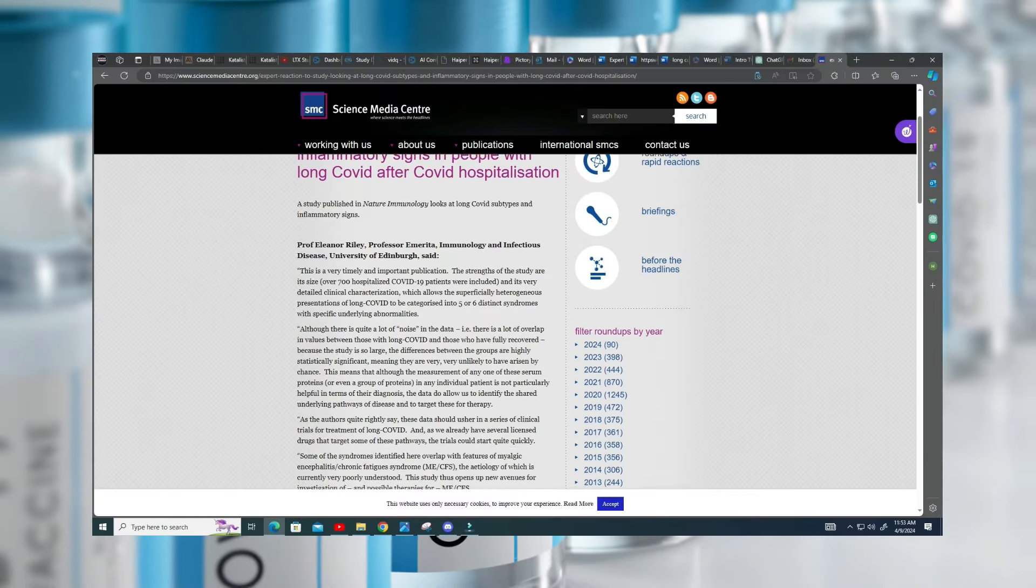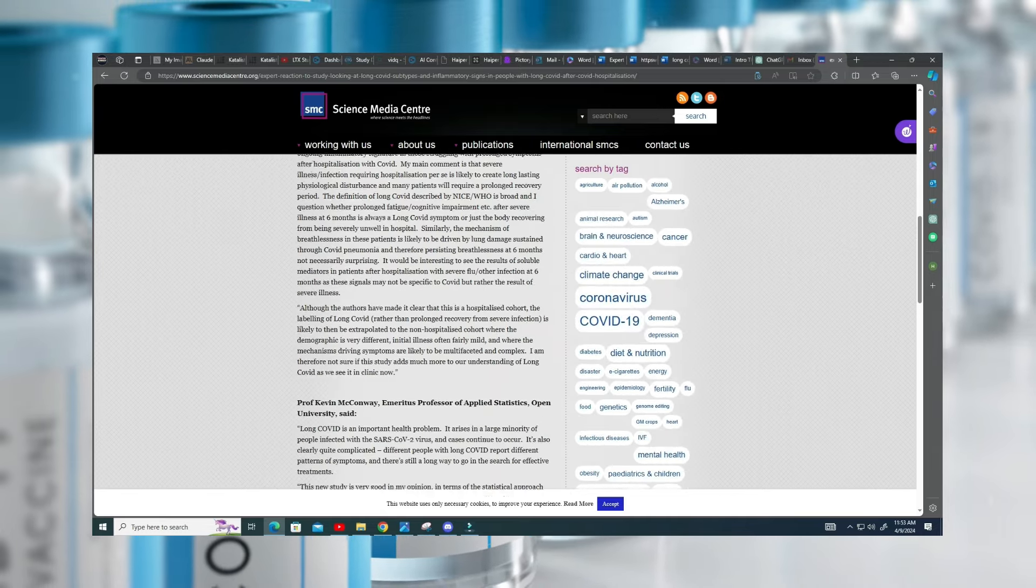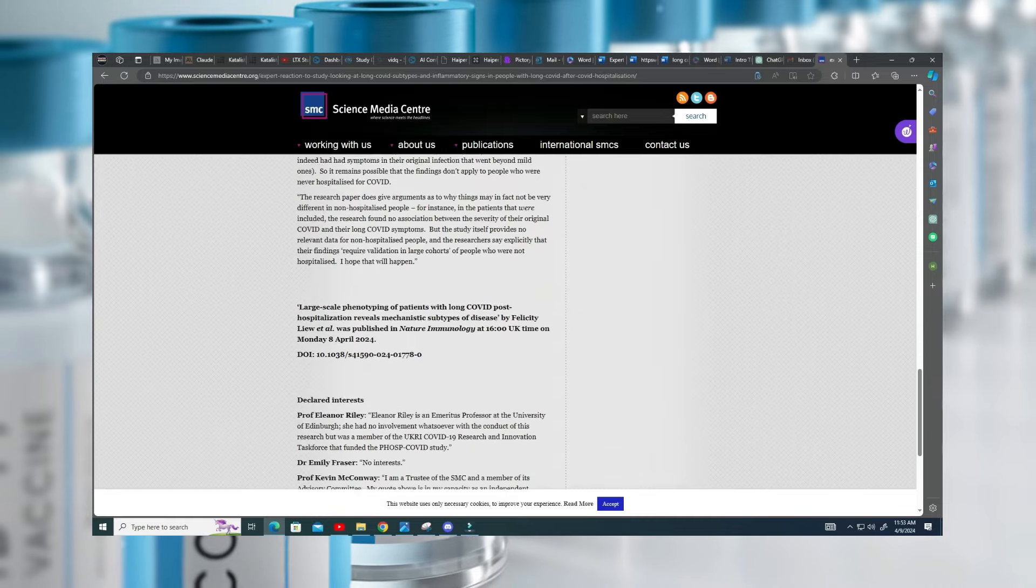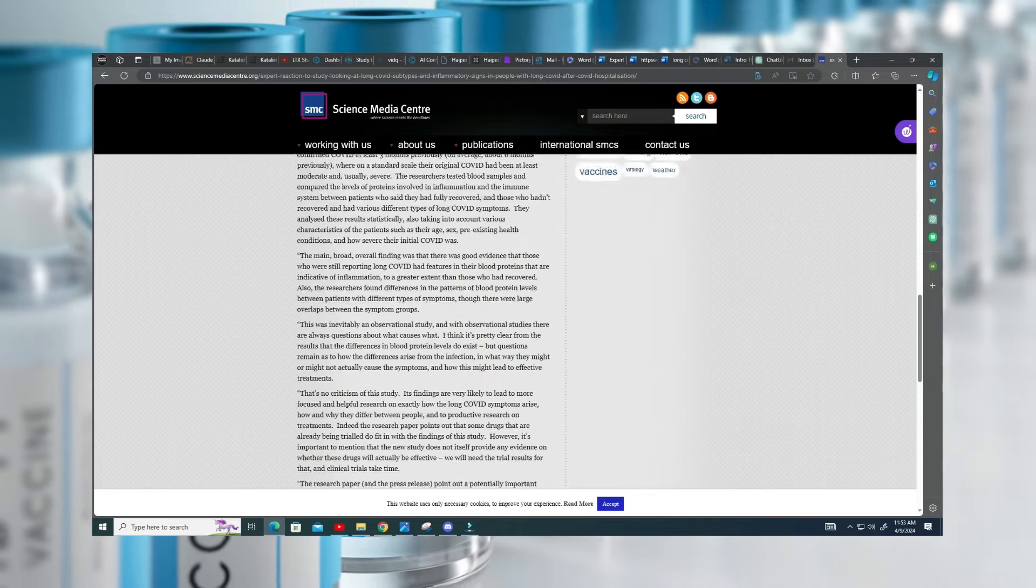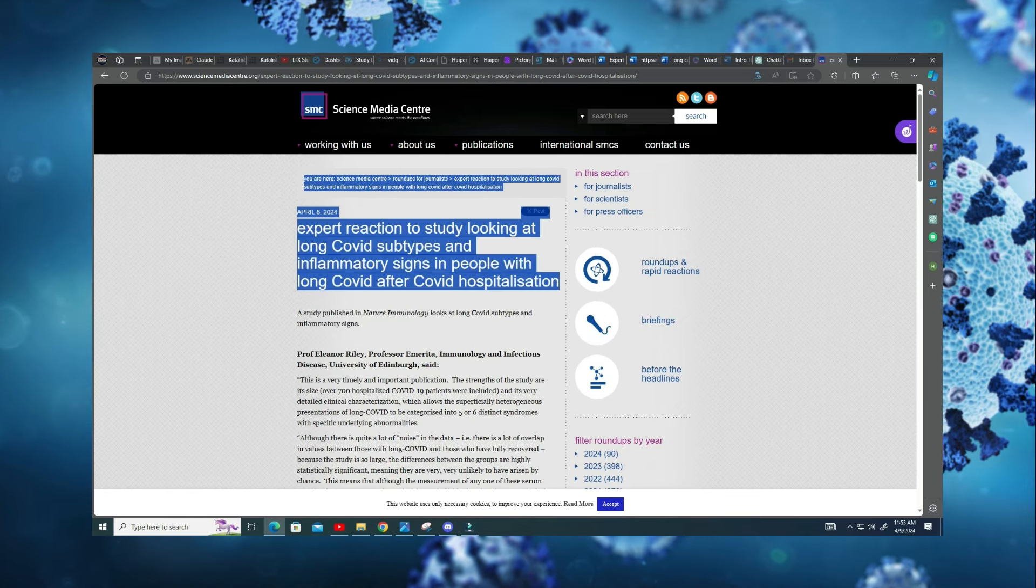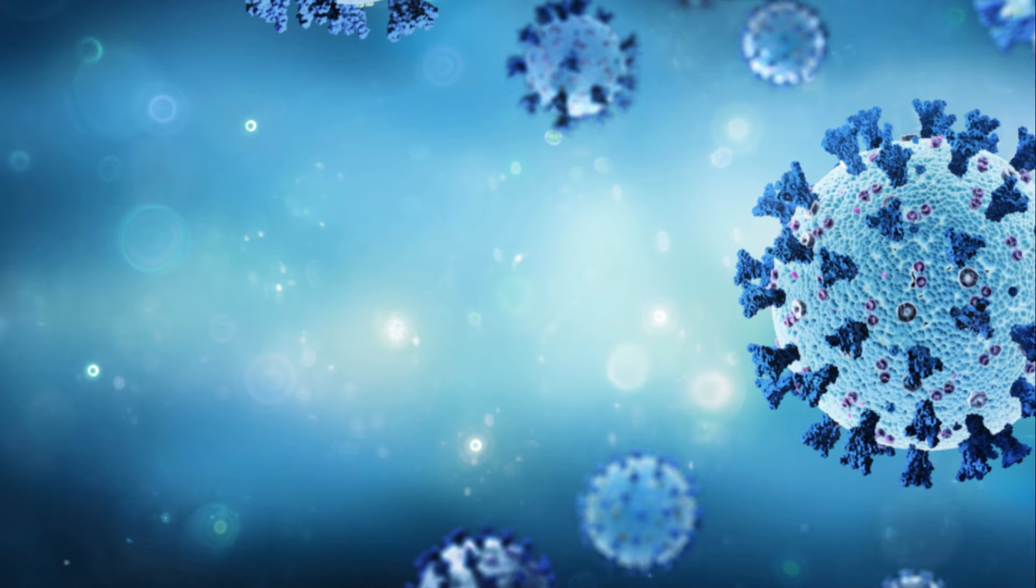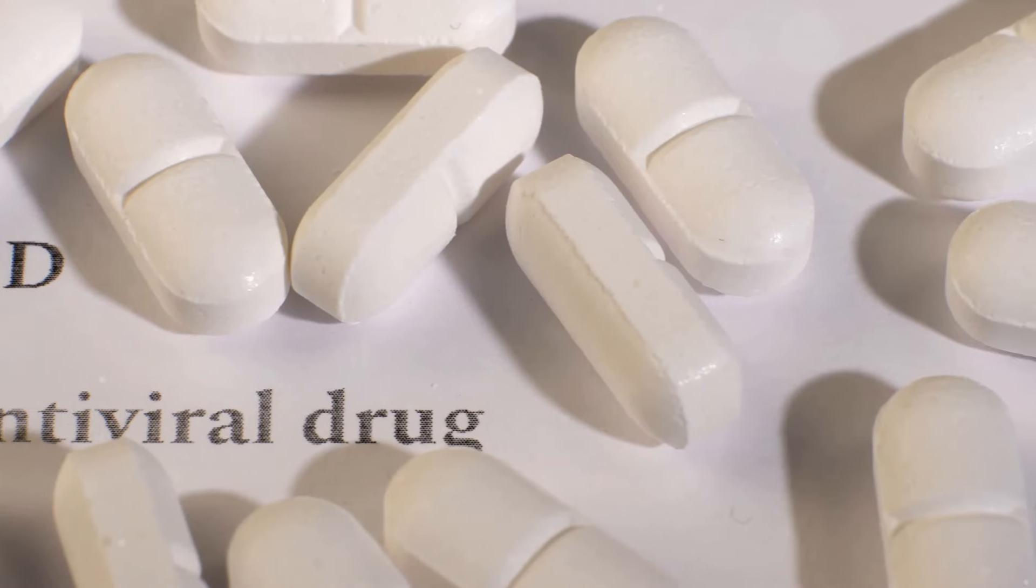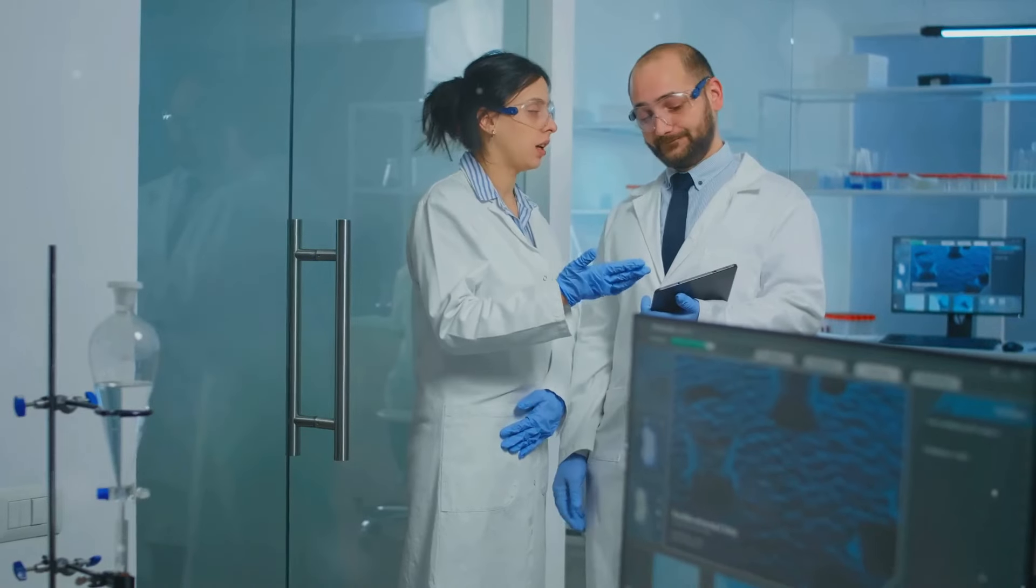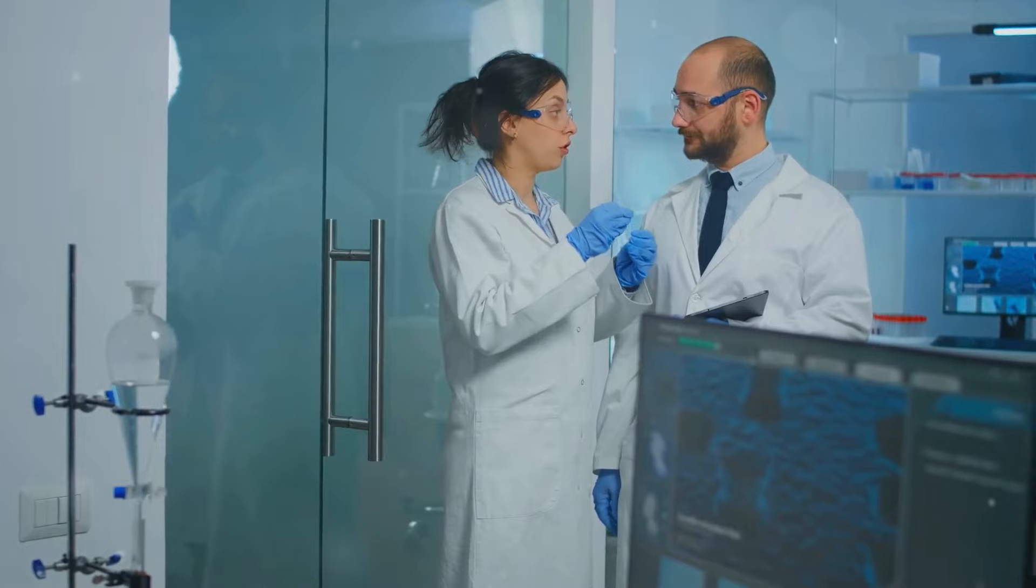Professor Eleanor Riley from the University of Edinburgh praises the study for its detailed clinical profiling over a robust patient cohort. In her words, the meticulous approach adopted by the research team has unveiled the intricate landscape of long COVID. We're now looking at five to six distinct syndromes, each characterized by unique abnormalities. Despite the inherent variability in the data, the large scale of the study lends statistical weight to these findings, opening up new potential therapeutic pathways.